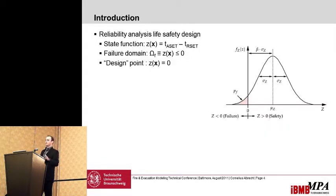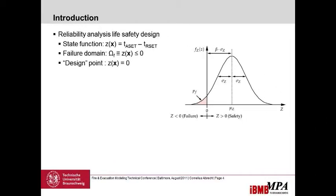To do reliability analysis, we need a state function — here it's simply the available safe egress time minus the required safe egress time — and a failure domain omega_f, which is where the state function falls below zero. The failure area is where the required safe egress time becomes greater than the available egress time. I also want to find the design point at zero, because that's the optimized solution: to the right I'm overly safe, to the left I'm not safe enough.